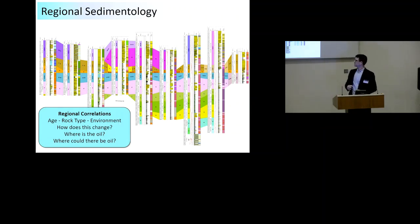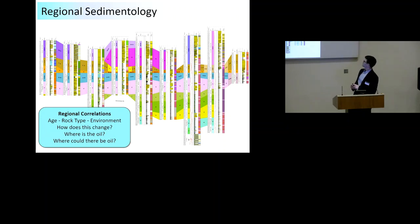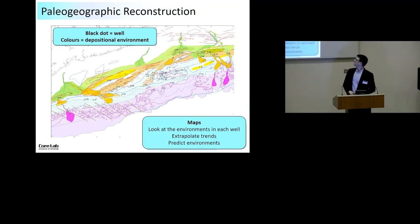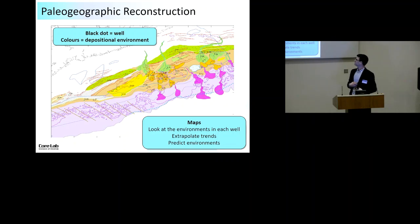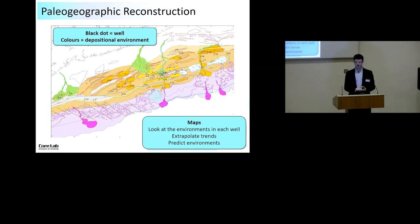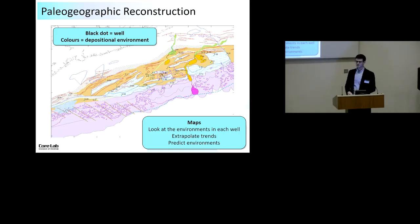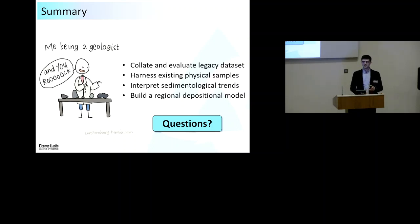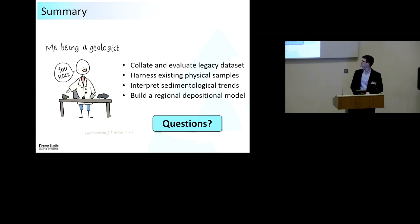Once we've got data for each individual well, we build it into regional correlations, looking at age, rock type and environment and how these change across the region over time. If we know we've got oil in one interval, we can look across cross sections to see if correlated sands elsewhere also contain oil. This ultimately culminates in predictive environmental maps for each stratigraphic package, showing where rocks were deposited in different environments and how they change over geological time - used to predict environments for oil deposition where people may not have explored yet.